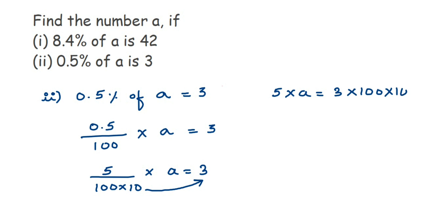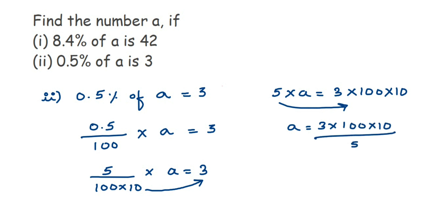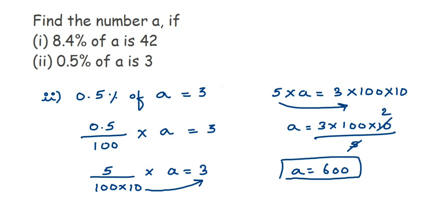Now 5 is in multiplication, so transposing it gives: a = (3 × 100 × 10) / 5. Cancel 10 in the 5 table: 5 twos are 10, so 10/5 = 2. Then 3 × 2 = 6, and 6 × 100 = 600. So a = 600. The key thing to learn is how to frame the equation — once you get that, you can do the cancellation easily. This can come for three marks. Drop a comment if you have further questions. Thank you for watching.